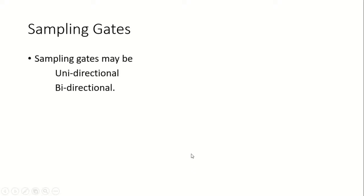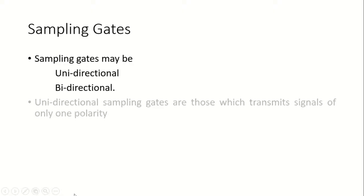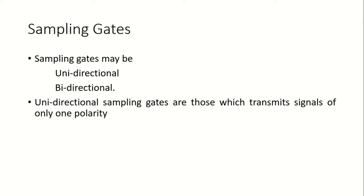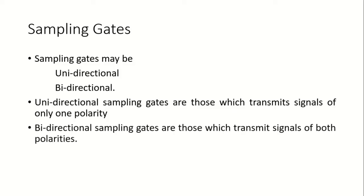Sampling gates can be of two types: unidirectional and bidirectional. Unidirectional sampling gates transmit signals of only one polarity, either positive or negative. Bidirectional sampling gates transmit signals of both polarities, both positive as well as negative.